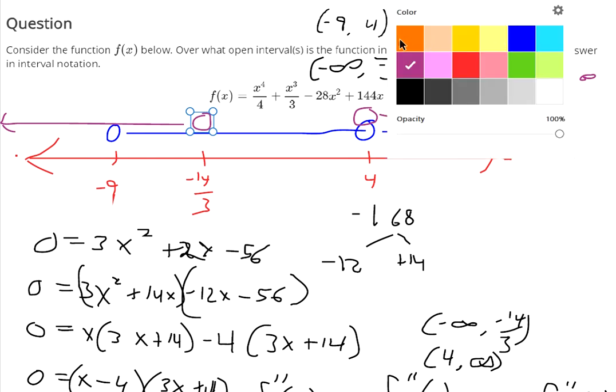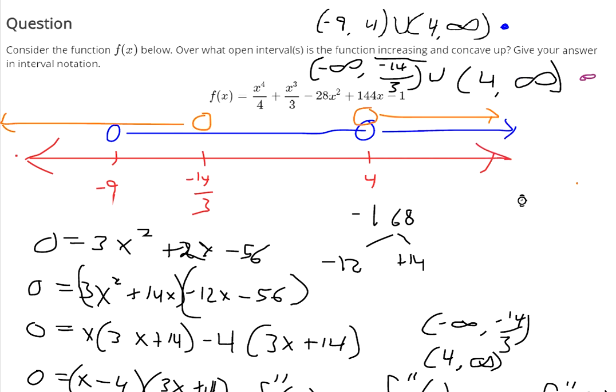So the place where it's both concave up... so they both are happening between negative 9 and negative 14 over 3. And they're both happening, so we need a union 4 to positive infinity. That's where it's both concave up and increasing.